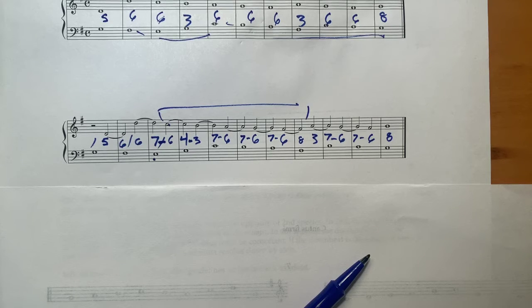So what fourth species does is it allows you to have a dissonance on the downbeat. It's the first time you've been allowed to have that.